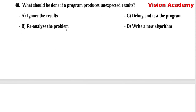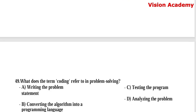Question number 48: What should be done if a program produces unexpected results? Option A, ignore the results. Option B, reanalyze the problem. Option C, debug and test the program. Option D, write a new algorithm. Here, option C, debug and test the program, is the right answer.